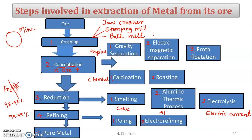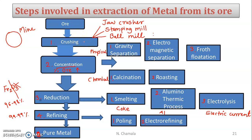Finally, after all steps you get the pure metal. To recap: ore from the mine is in the form of big lumps. It is crushed using the jaw crusher to stone size, then sent to the stamping mill, and after that sent to the ball mill to get fine pulverized ore. Crushing means reducing the ore to fine powder.